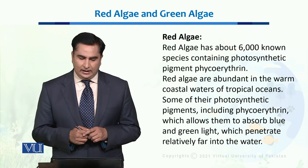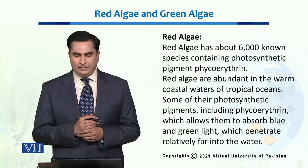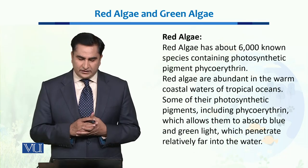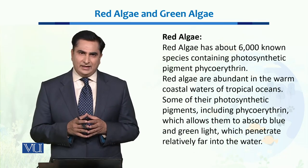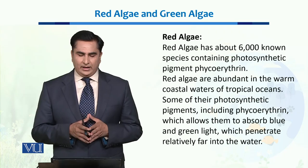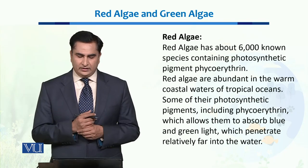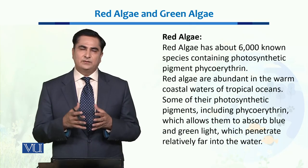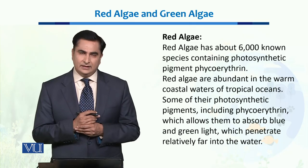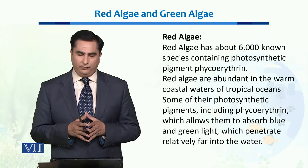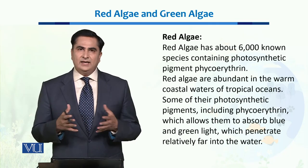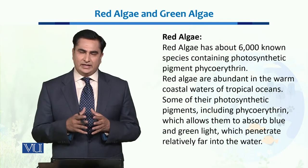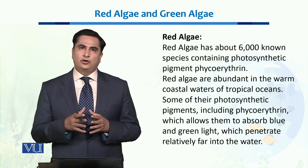When we talk about red algae, red algae has about 6,000 known species. They are all photosynthetic, and the pigment they contain is called phycoerythrin. This phycoerythrin gives them a red color and helps them in photosynthesis for the preparation of their own food. Red algae is found abundantly in warm waters, especially in the marine waters of tropical oceans.